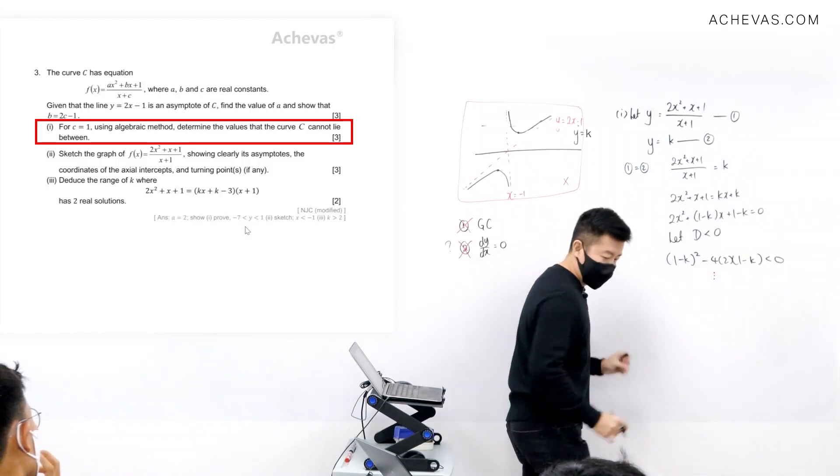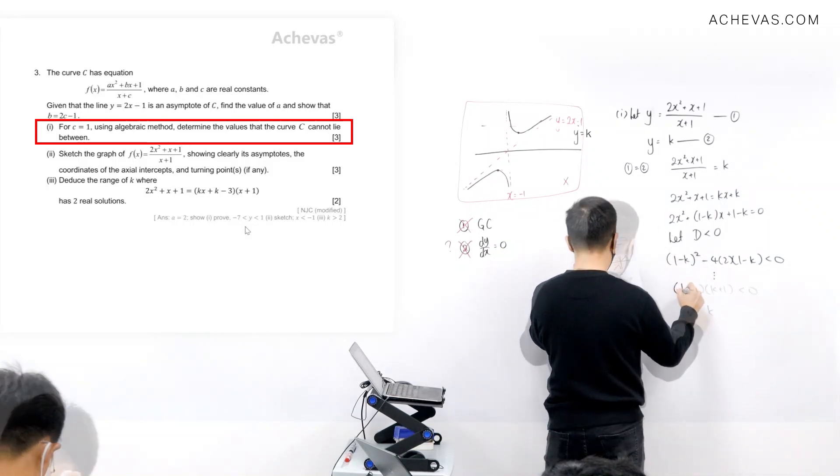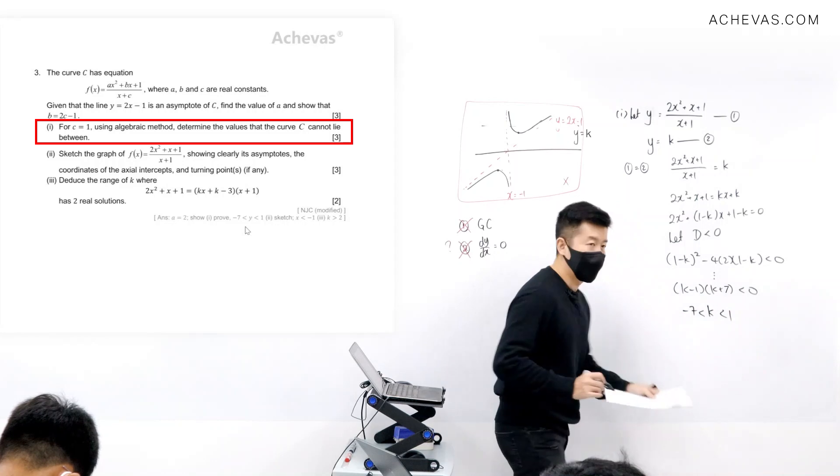If you were to expand and factorize this, you will be getting k between minus 7 and 1.